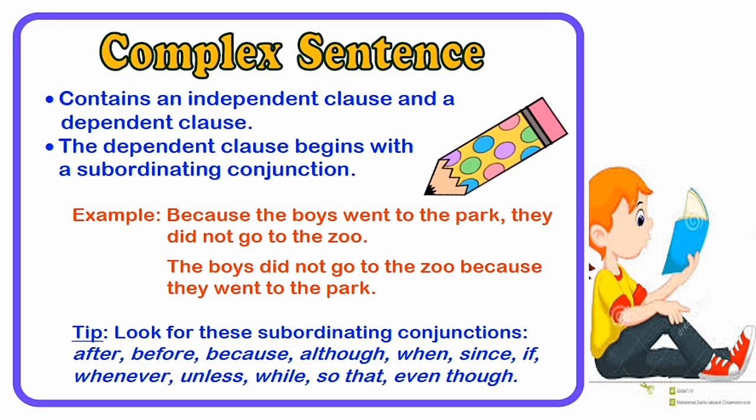To know whether a sentence is a complex sentence, here is an important tip. Look for these subordinating conjunctions: after, before, because, although, when, since, if, whenever, unless, while, so that, even though.